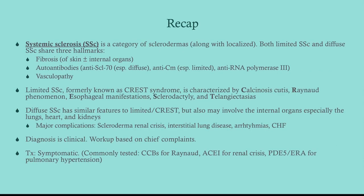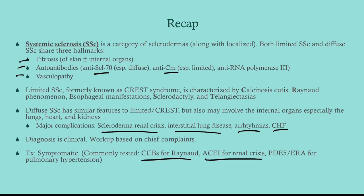To recap: both diffuse and limited systemic sclerosis share fibrosis, presence of autoantibodies, and vasculopathy. Limited is the CREST symptoms with scleroderma always distal to the elbow, distal to the knee, and the face. Diffuse can be anywhere including the trunk, and also involves internal organs — lung, heart, and kidneys. Major complications: scleroderma renal crisis, interstitial lung disease, arrhythmias, and congestive heart failure. Anti-Scl-70 = diffuse; anti-centromere = limited. Treatment: calcium channel blockers for Raynaud's, ACE inhibitors for renal crisis, PDE5 inhibitors or bosentan for pulmonary hypertension.